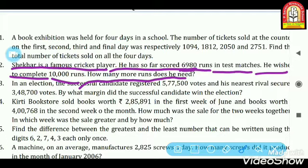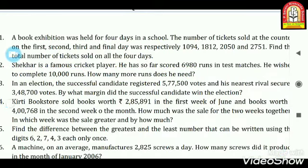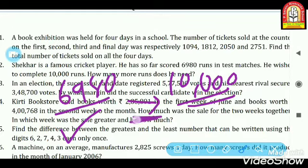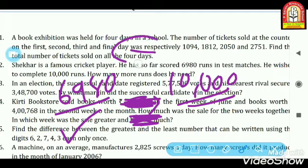कितने और रन उसको करने पड़ेंगे? 6,980 उसने कर लिये हैं और 10,000 तक जाना है, तो कितने बाकी हैं? हमें वो नंबर कैसे मिलेगा? 6,980 से 10,000 के बीच का जो gap है, means difference — वो difference जितना होगा, उतना उसको score करना पड़ेगा, तभी वो 10,000 तक जा पाएगा। तो बीच के रन find करने के लिए, वो gap find करने के लिए, हमें subtraction करना पड़ेगा।